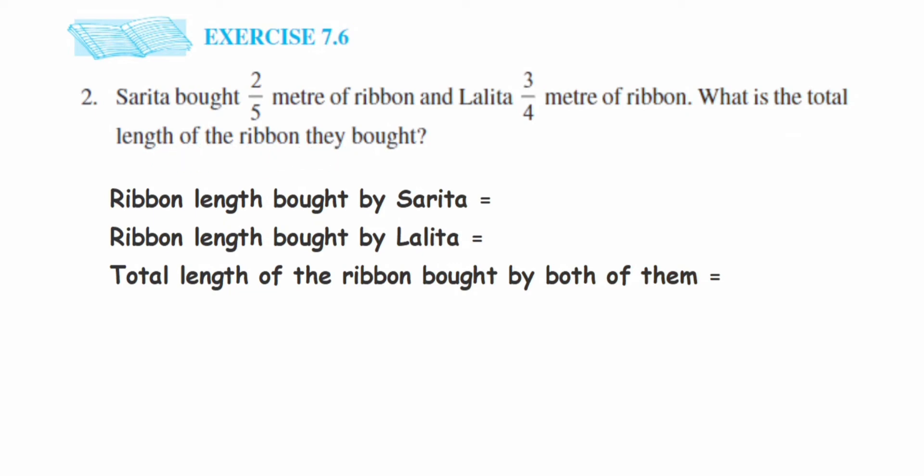First, we'll write down the ribbon length bought by Sarita, which is 2/5, and Lalita bought 3/4. These two values are given to us. We have to find the total, which means we have to add them.